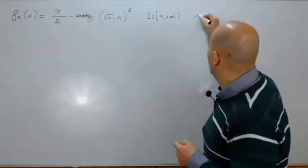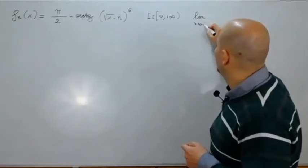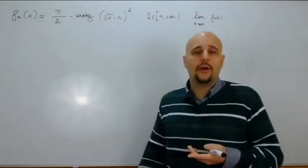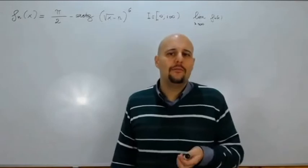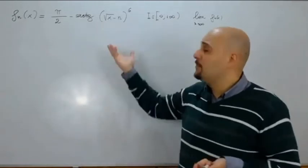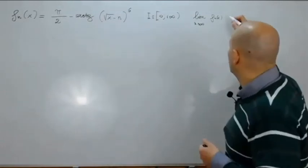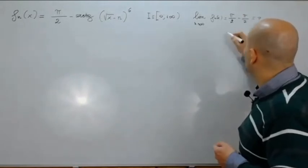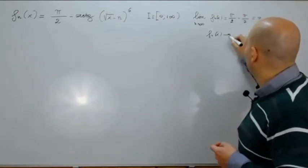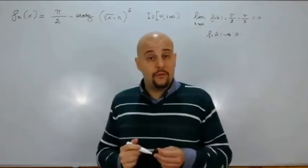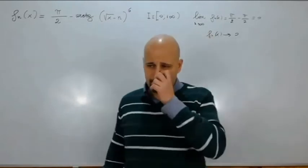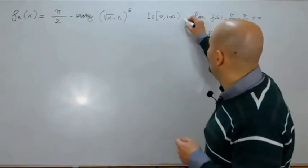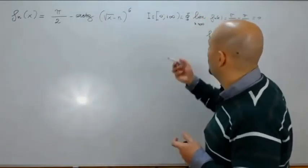Andiamo a calcolare come al solito il limite puntuale per n tendente all'infinito di f_n(x). Ricordando che √x - n → -∞, alla sesta è +∞, e arctan(+∞) = π/2, abbiamo π/2 - π/2 = 0. Quindi la funzione limite è identicamente nulla: f_n(x) converge puntualmente a 0, e l'insieme di convergenza puntuale coincide con l'insieme di definizione.